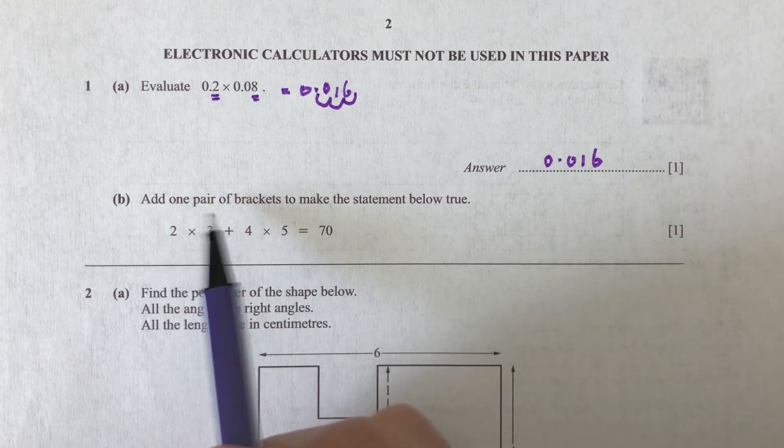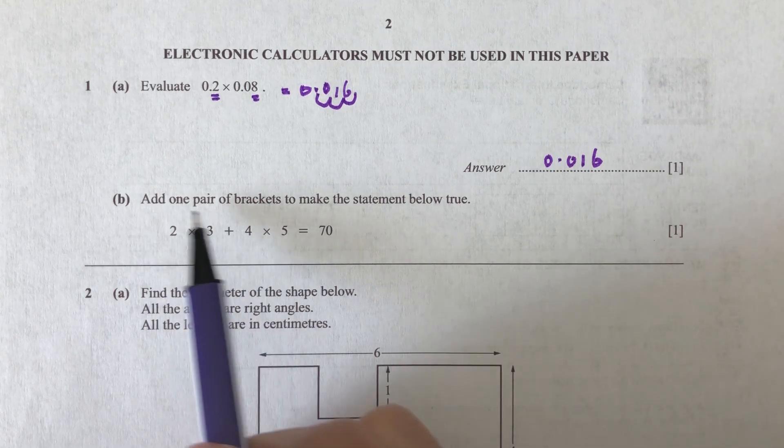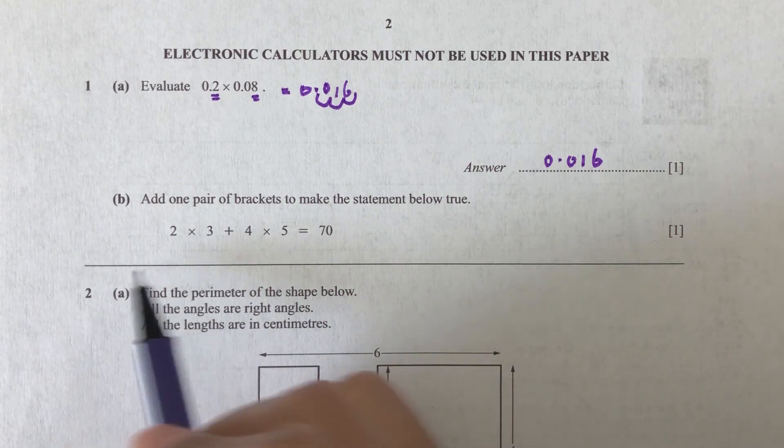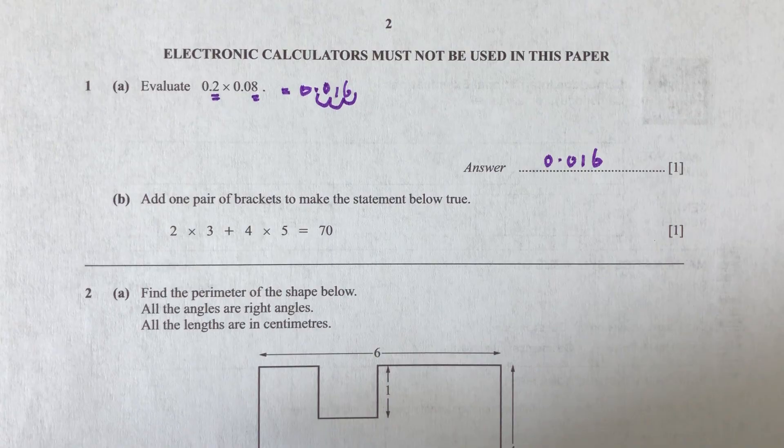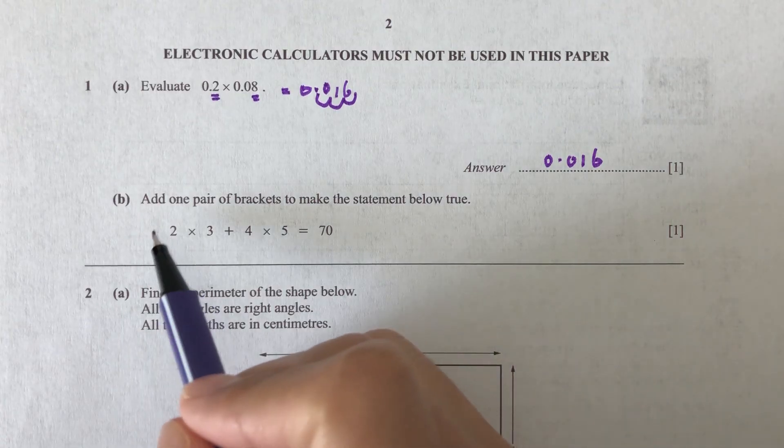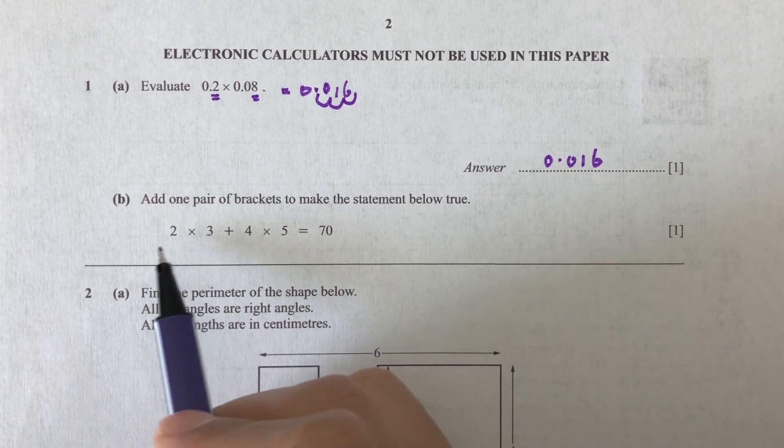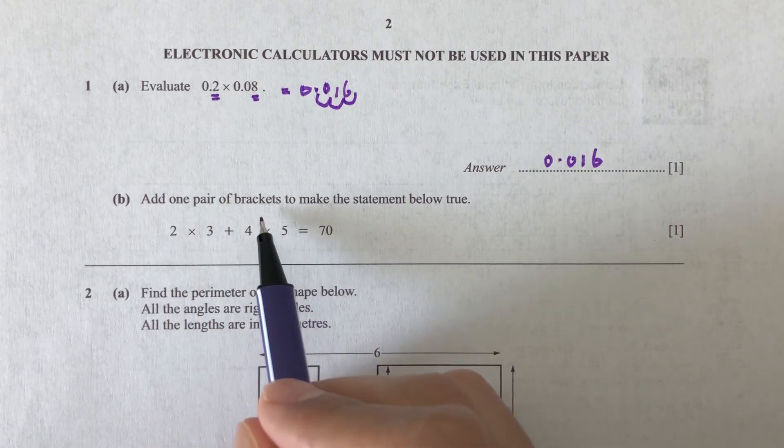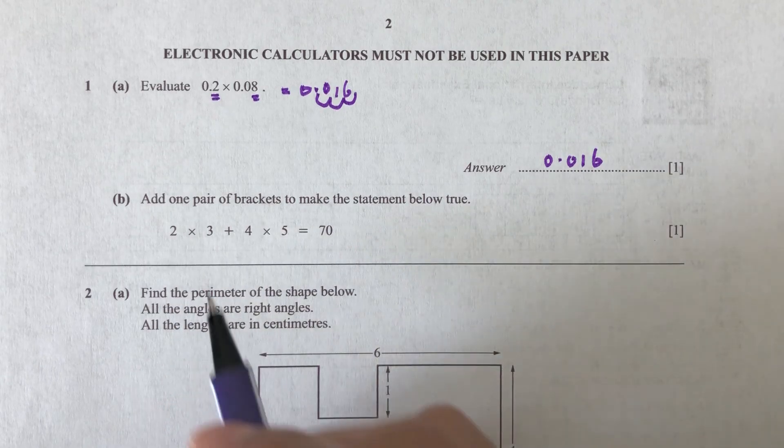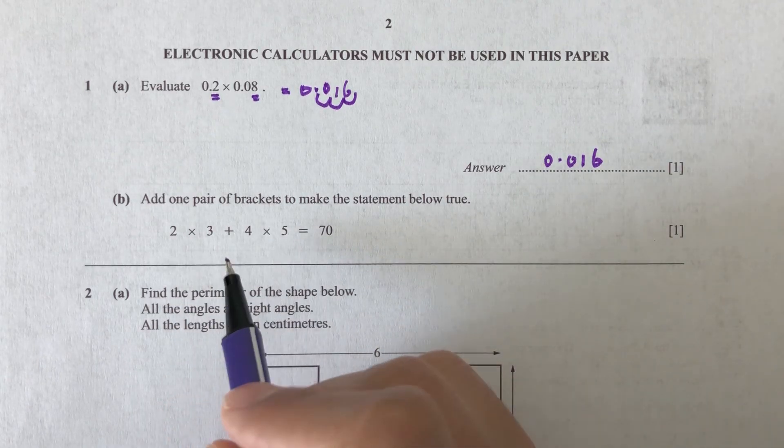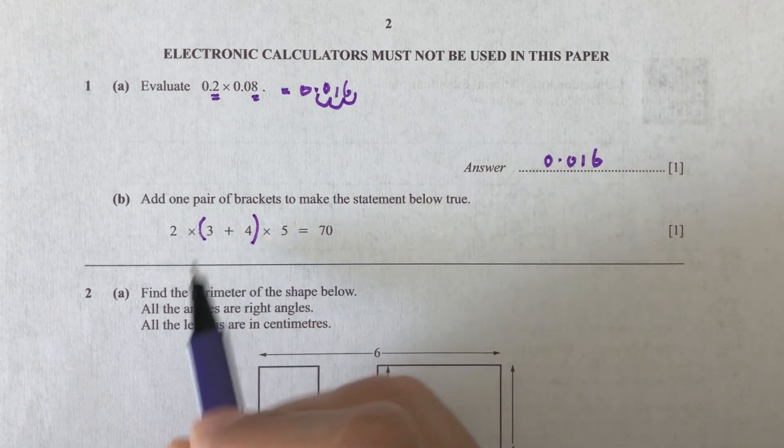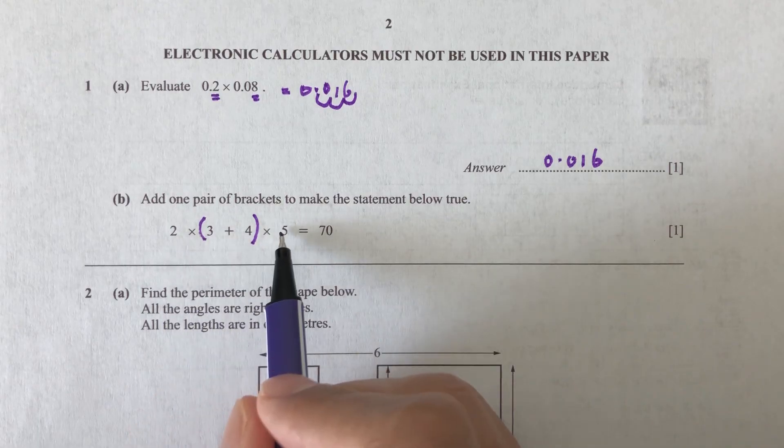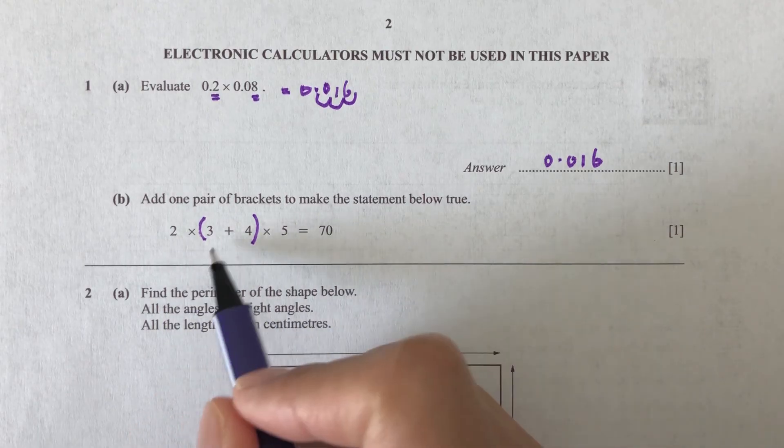Now part B. Add one pair of brackets to make the statement below true. So where can I add my bracket so this term becomes 70? For example, if I put my bracket on the first two, we will have 2 times 3 is 6, 6 plus 4 times 5 is 20, so it will be 26, which is not good. So in this case, I can see I will need to put my bracket here because 3 plus 4 is 7. And then we have 2 times 5 is 10, times 7 is 70.